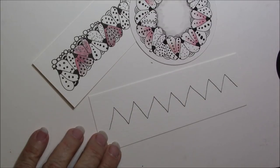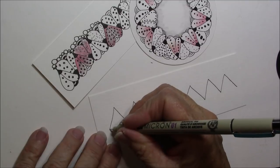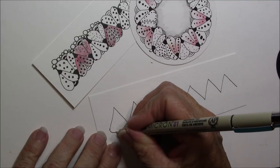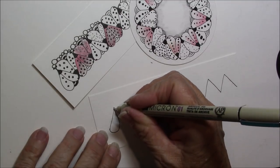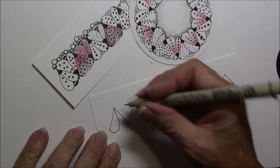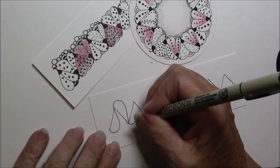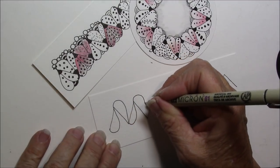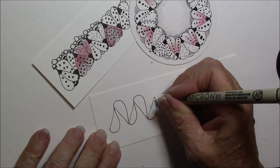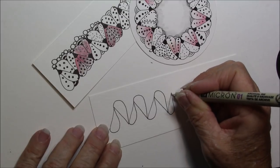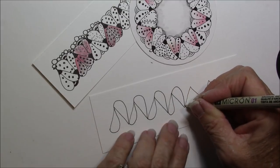And now I'm going to come back and I'm going to make kind of a petal shape and I'm just going to let it flow from one side to the other all the way down.